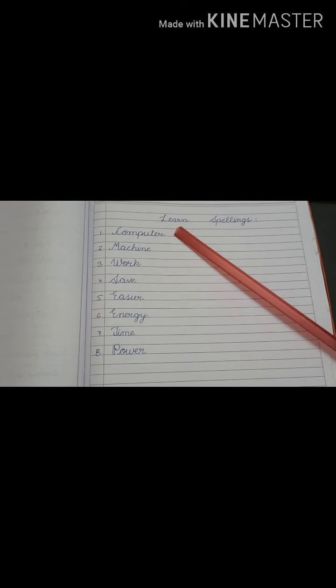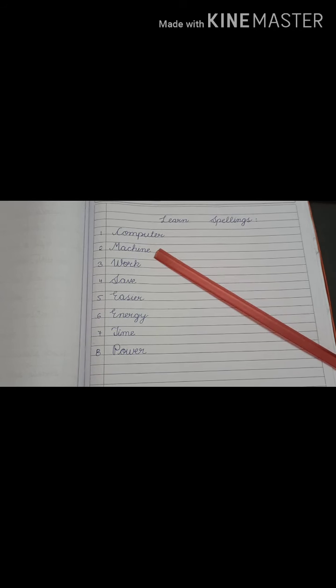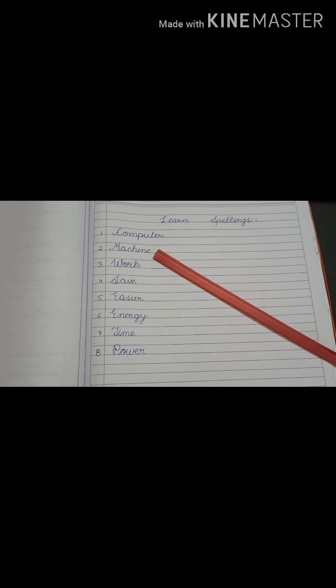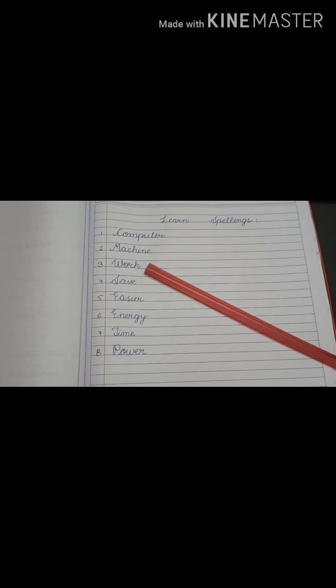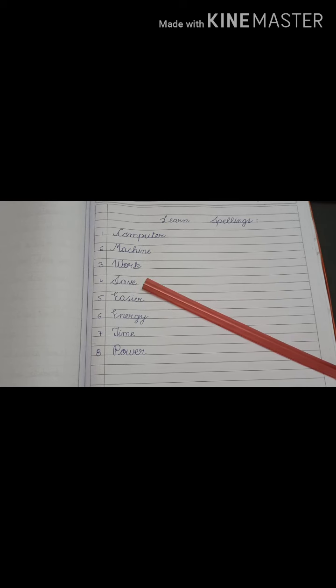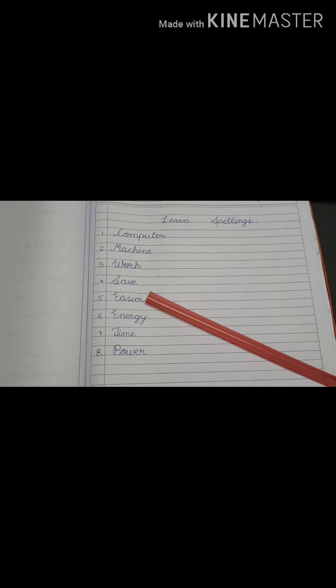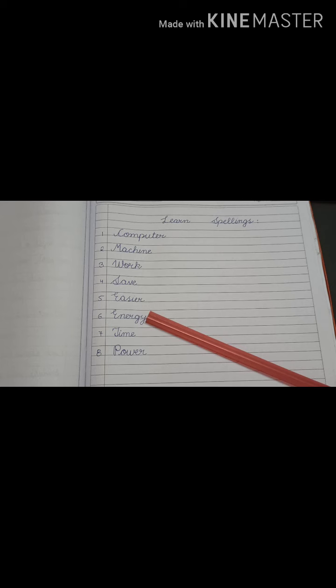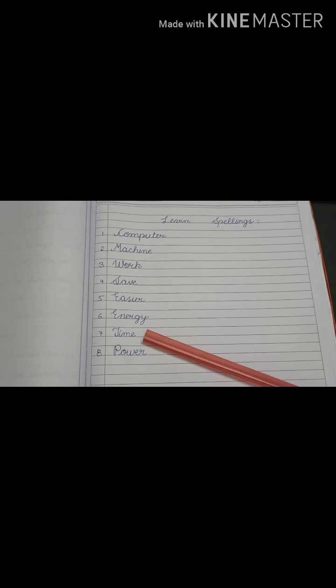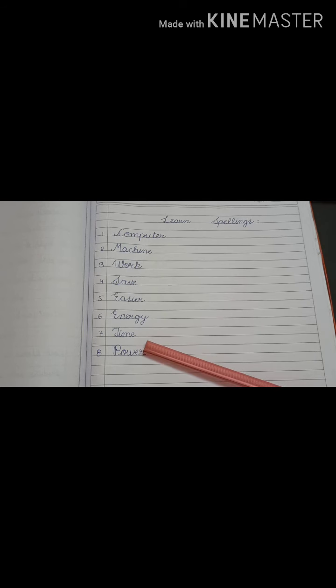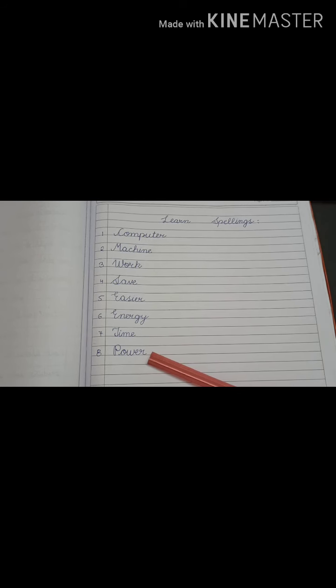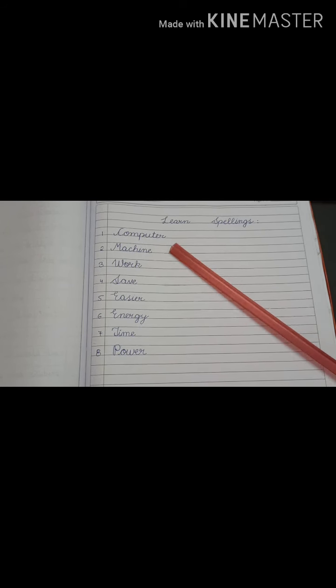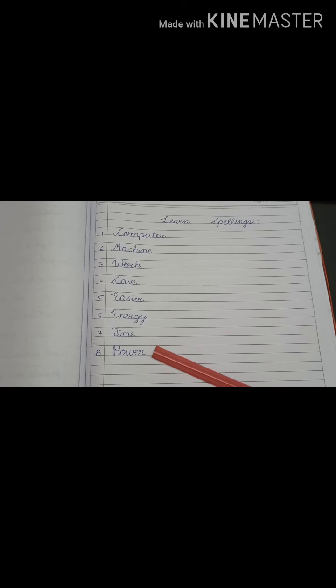First one is computer. Second is machine. Third one is work. Fourth one is save. Fifth one is easier. Sixth one is energy. Seventh one is time. And eighth one is power. And students, write down these spellings five times in your rough copy.